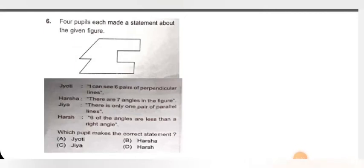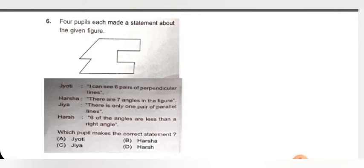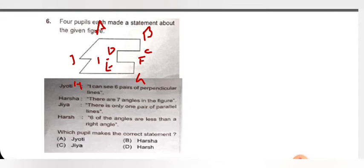Next question: 4 pupils each made a statement about the given figure. Jyoti said: I can see 6 pairs of perpendicular lines. First, let's know what perpendicular line means — perpendicular line means if there is a baseline and a line at exactly 90 degree straight up from it, that is called a perpendicular line. Now let's observe the figure. I'm going to name the points A, B, C, D, E, F, G, H, I, J to understand the question.